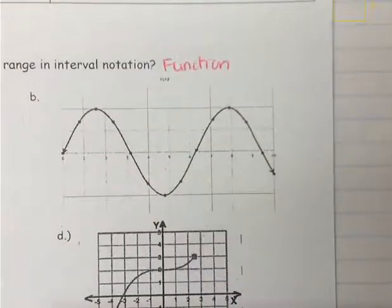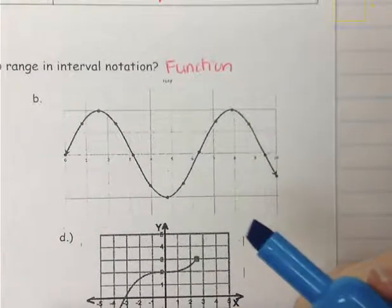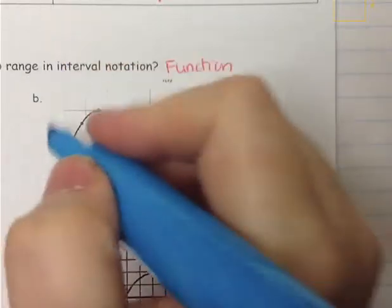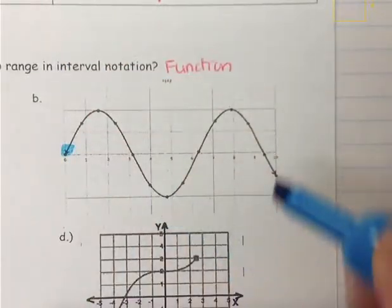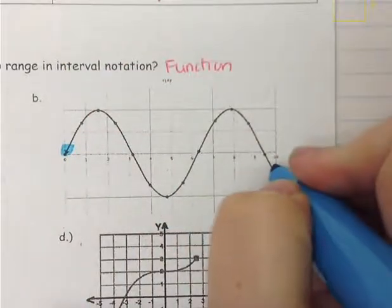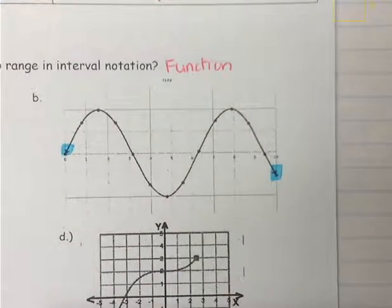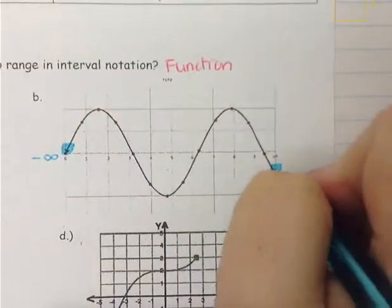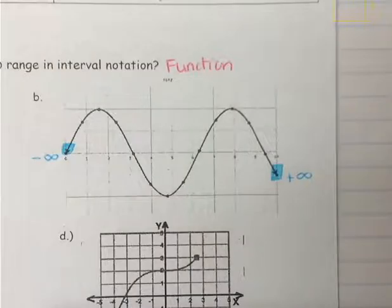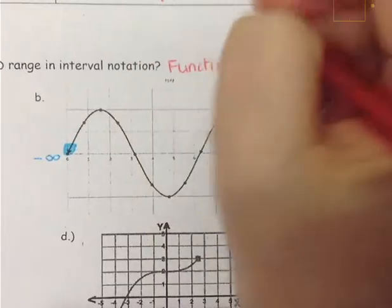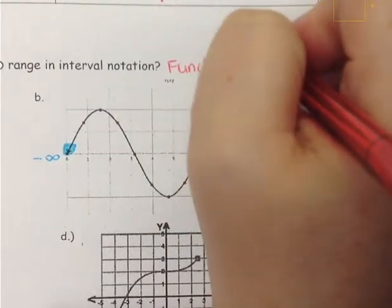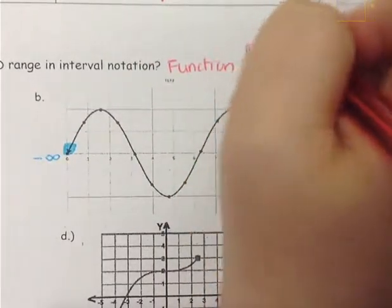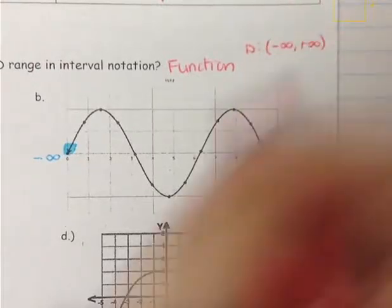Now to determine the domain, I'll put it in blue. The farthest left point is this arrow, and the farthest right point is this arrow. The left arrow means negative infinity, and the right arrow means positive infinity. Our domain for this example is open bracket, negative infinity, comma, positive infinity, open bracket.